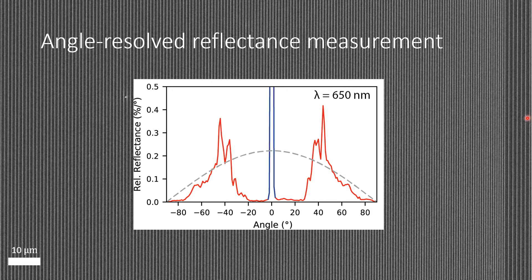With angle-resolved reflectance measurements, we can see the effect we designed the structure for — the angle versus relative reflectance. First, we still have a zero order reflection, but it is only around 6%, so fairly low. We have exactly the diffraction pattern we designed for, between 30 and 70 degrees. We also tried to achieve scattering following a cosine law — a Lambertian scatterer — so that the brightness is the same from all angles, and we actually achieved this more or less. This measurement is at 615 nanometers.